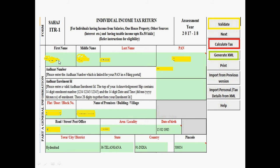First, enter your first name, middle name, surname, PAN number, and Aadhaar number. Then fill in your complete address — flat number, area, city, state, country, and PIN code.